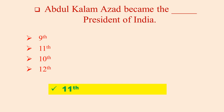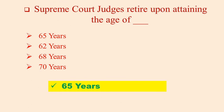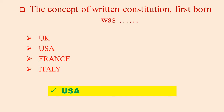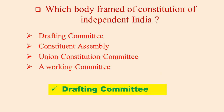Indian Constitution took the concept of Single Citizenship from UK. Who proposed the Preamble before the Drafting Committee of the Constitution? Jawaharlal Nehru. Supreme Court judges retire upon attaining the age of 65 years. The concept of a written Constitution was first born in the USA. The Federal System in India is based on the model of UK. Which body framed the Constitution of Independent India? Drafting Committee.